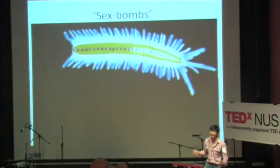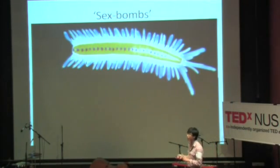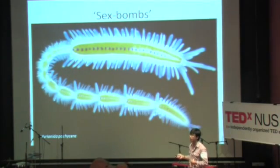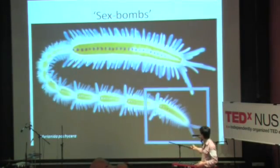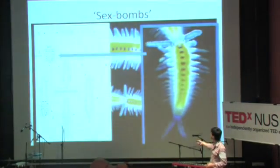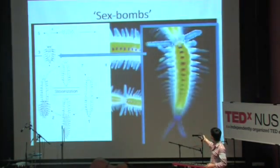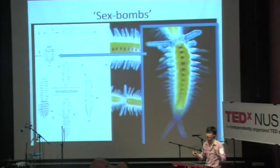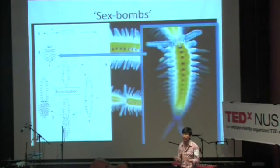Now last one, saved for the last: sex bombs. These are marine worms. When they're ready to mate, they grow out stolons — little mini clones which are filled with sperm and eggs. They send all these mini clones off; they break off, swim up to the surface of the sea, and they explode in a huge orgy of sperm and eggs.